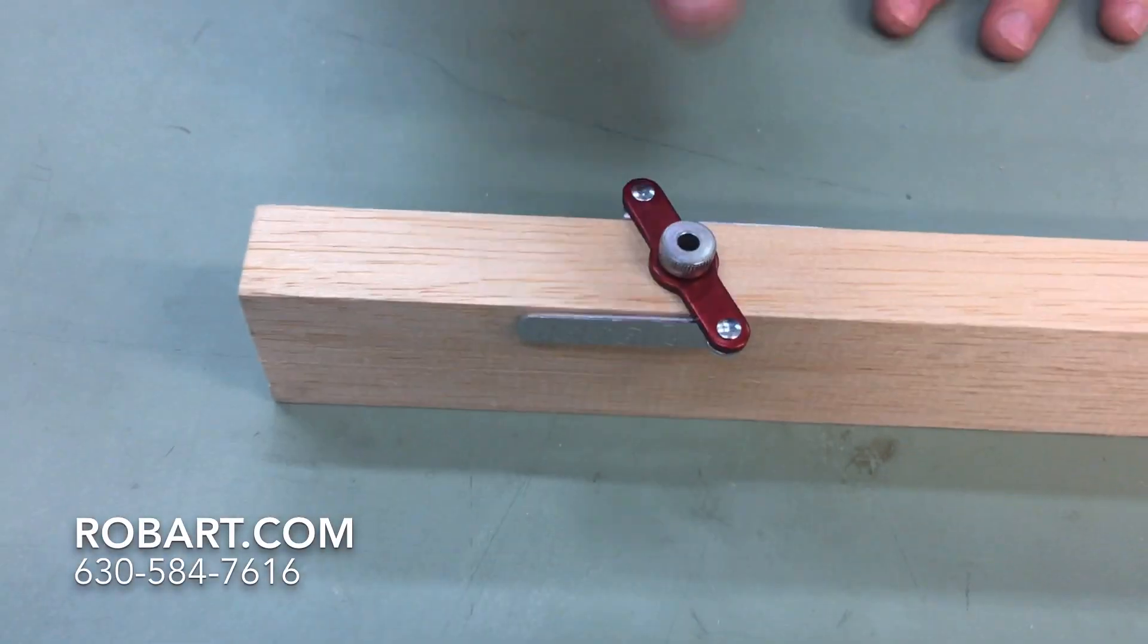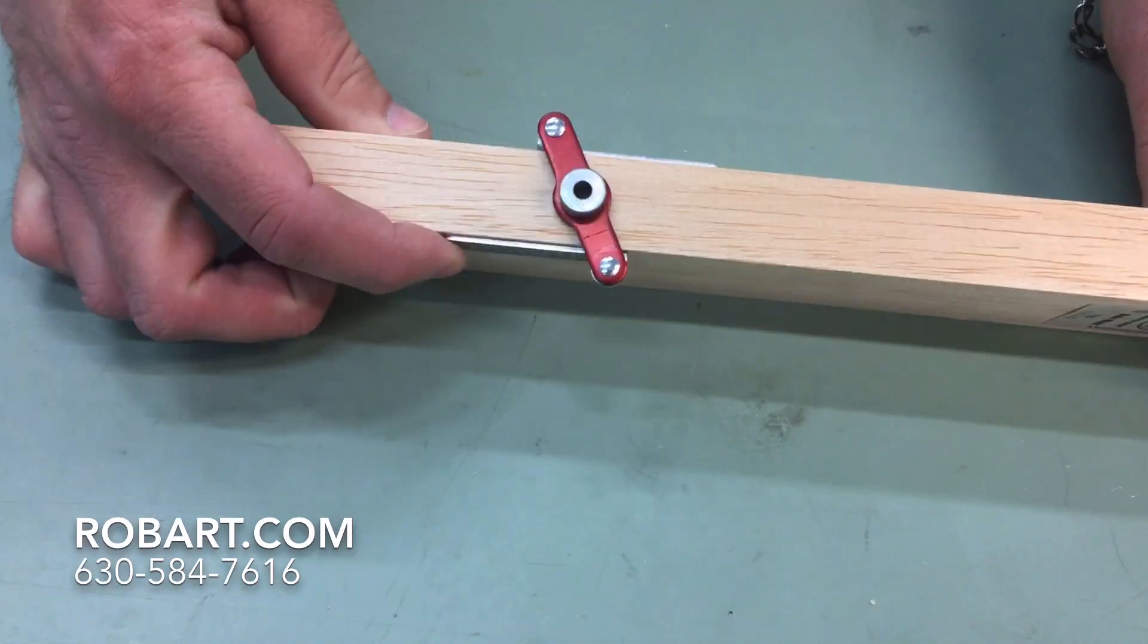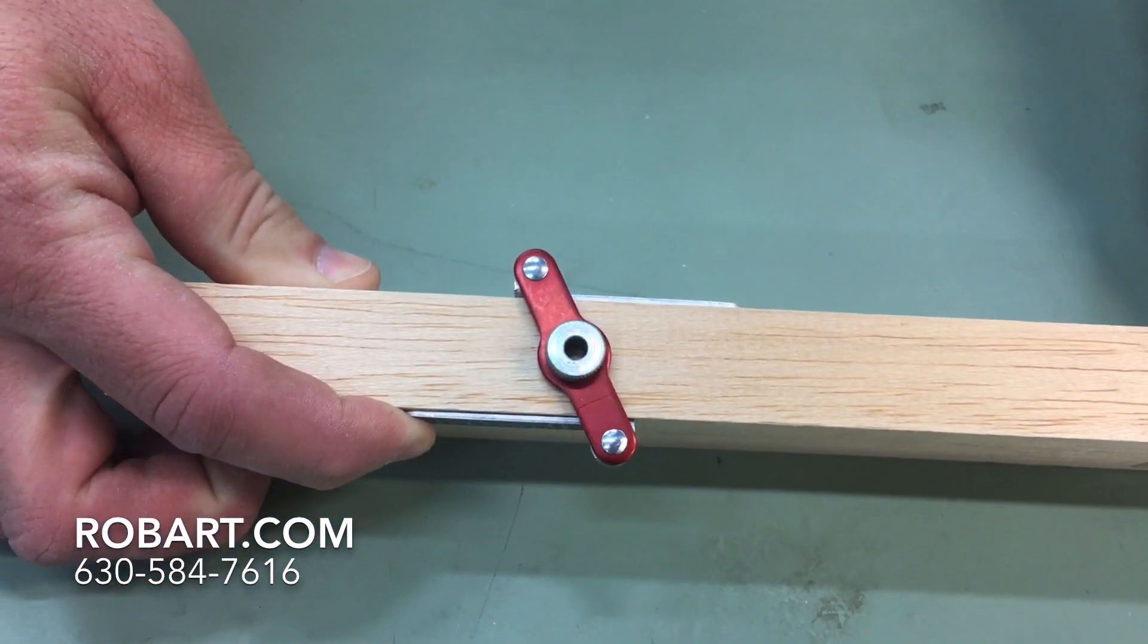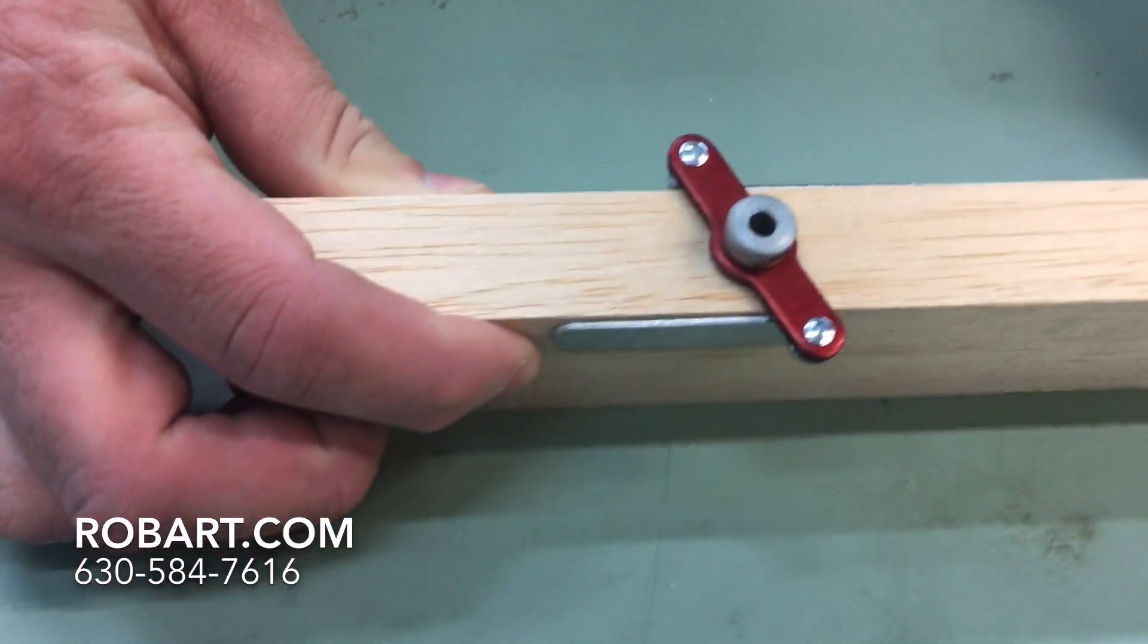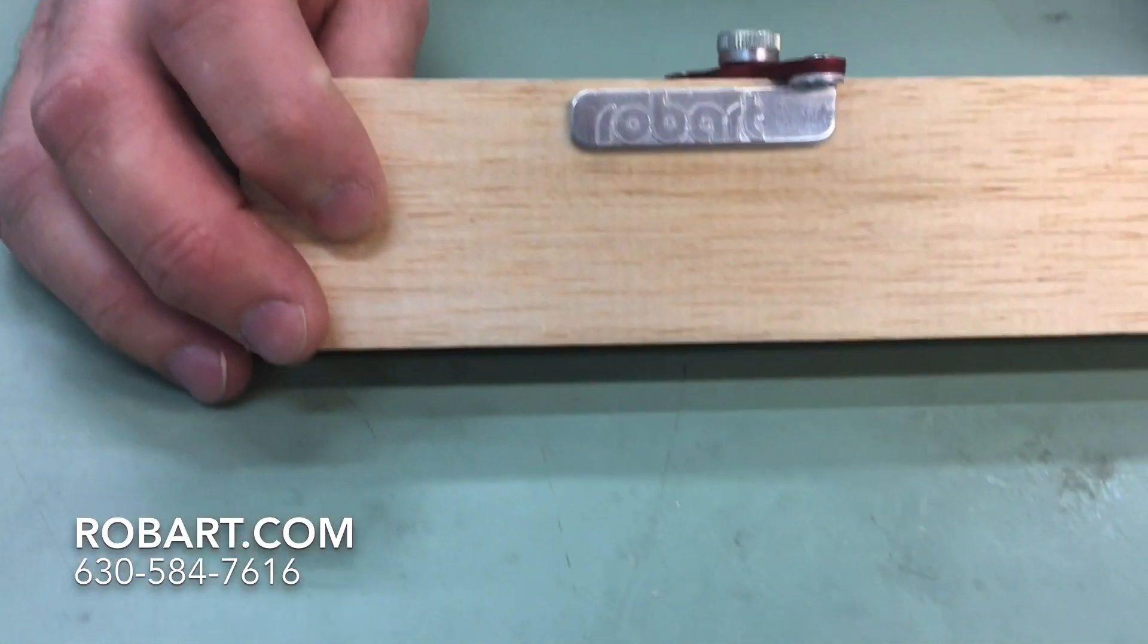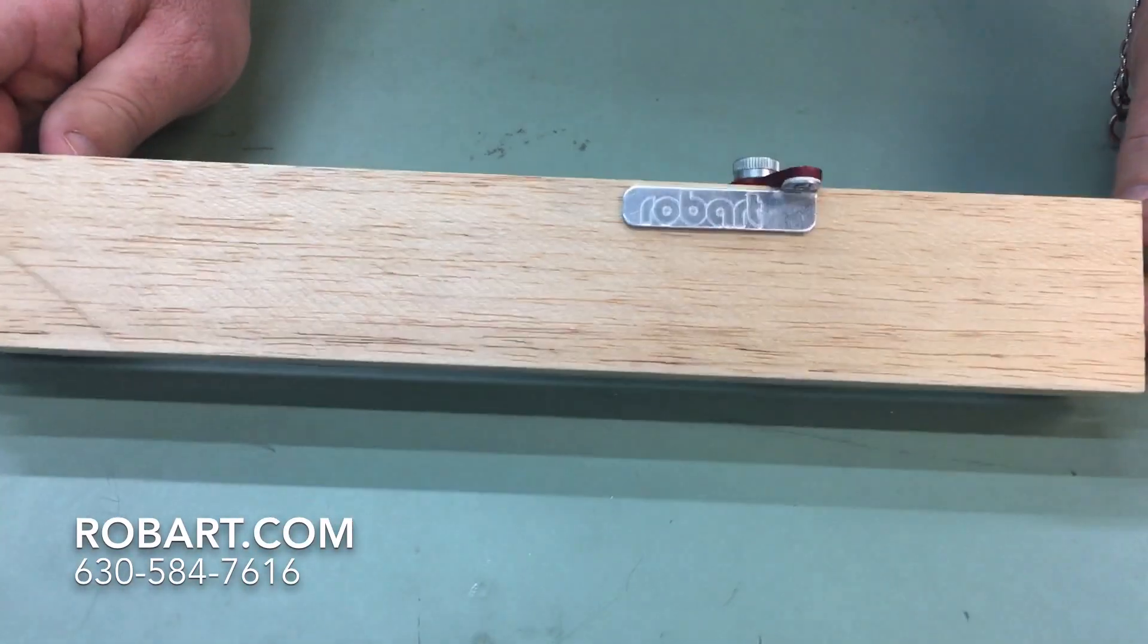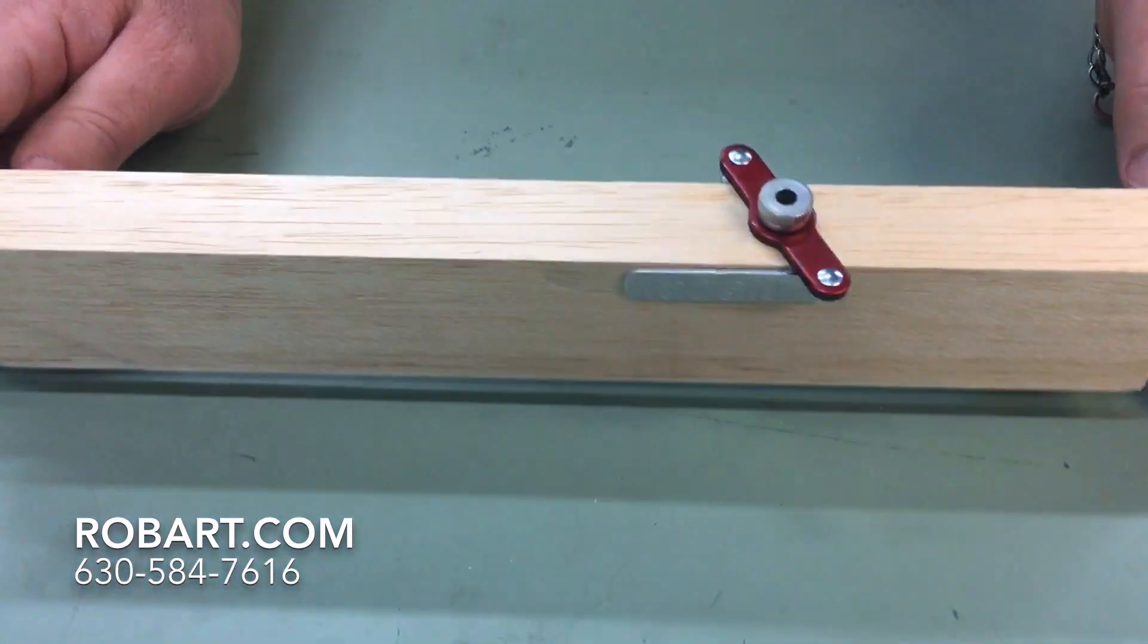So if you got any further questions on the drill centering jig by Robart, give us a call at 630-584-7616. Check us out online at www.robart.com or follow us on Facebook, YouTube, Instagram, and Pinterest. Have a great day.